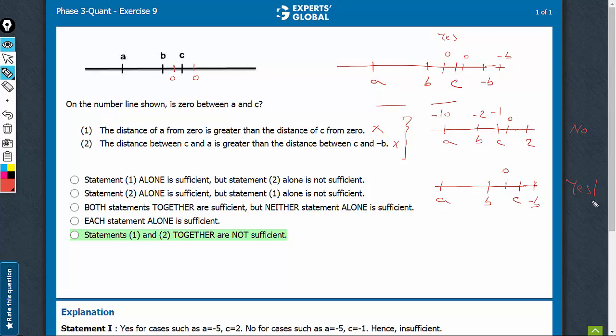So, even on combining, both the conditions are met. In this case, we got no. This case is meeting both the conditions, leading to no. This case is meeting both the conditions, leading to a yes. So, even on combining, yes and no both are possible. So, even combining does not work, E is the right answer choice.